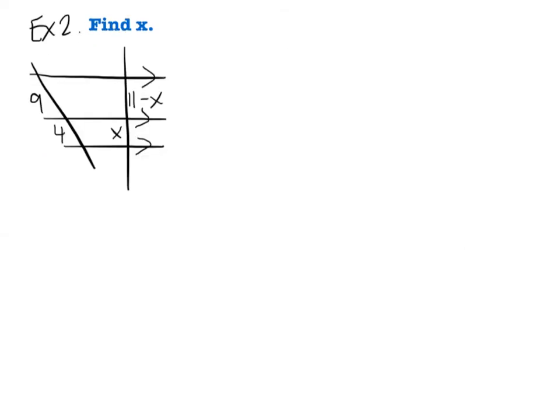For this second example, again we're going to check to see if our conditions are met. I have parallel lines. Then automatically I can say that the transversals, this one and this one, are cut proportionally. So I can go ahead and set up those two ratios and set them equal to each other. That's 9 over 4 is the same as 11 minus x over x. Now setting up the proportion is easy, but this is a little bit more difficult than the proportions we've solved before. I'm going to go ahead and cross multiply.